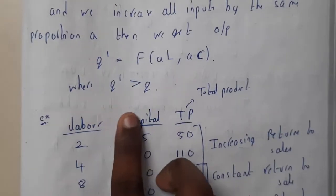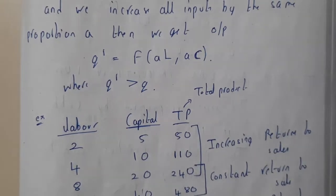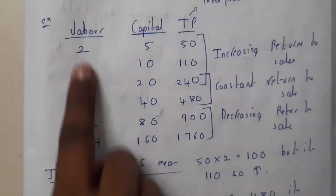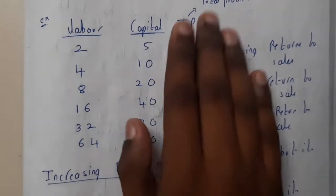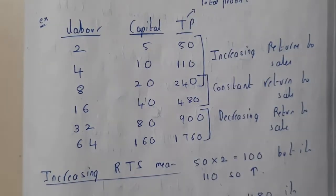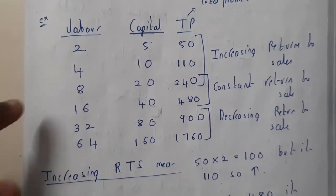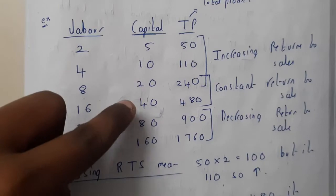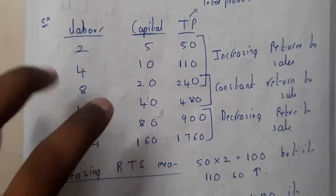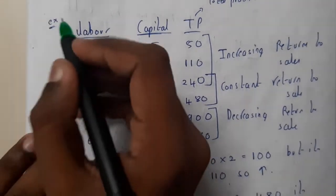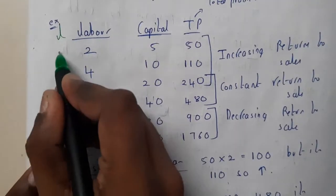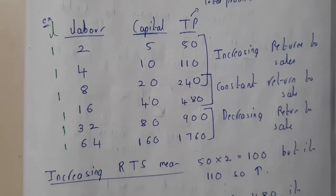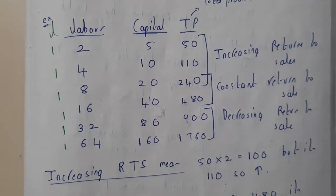Let's take a small example. Increase the labor equally: 2, 4, 8, 16, 32, 64. Capital: 5, 10, 20, 40, 80, 160. Here all other factors are kept constant. Like land is kept constant at one value. This is fixed, but you are increasing the labor and capital.